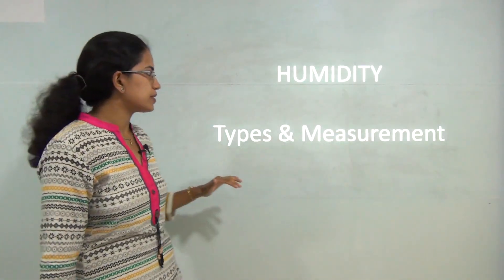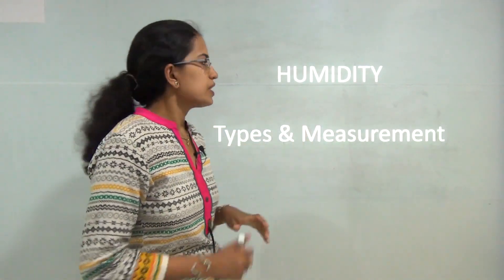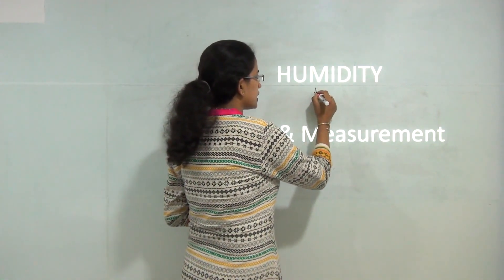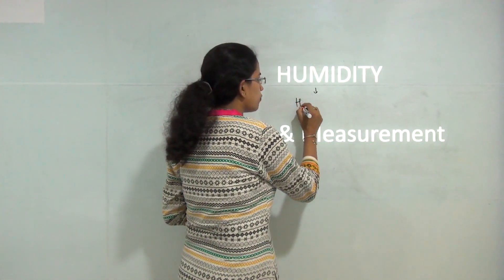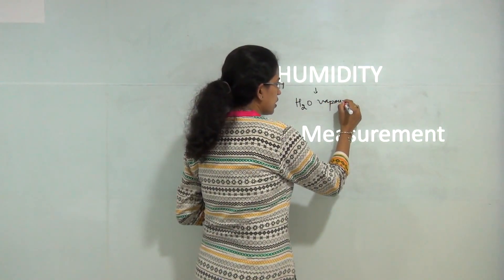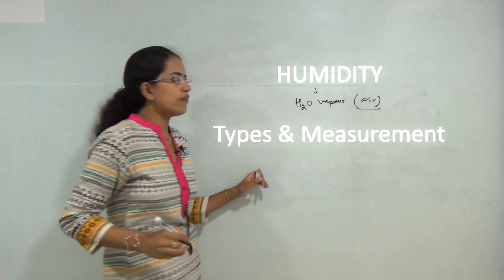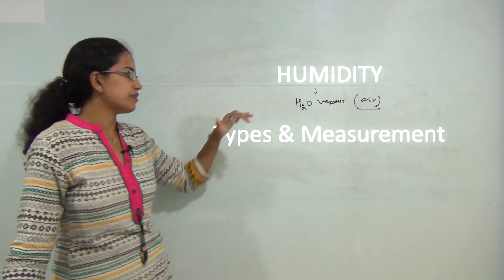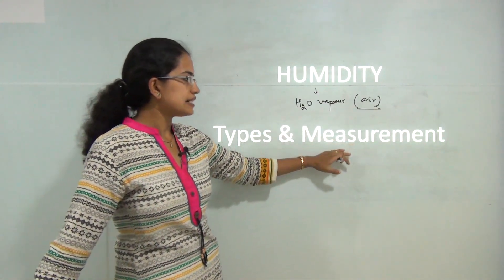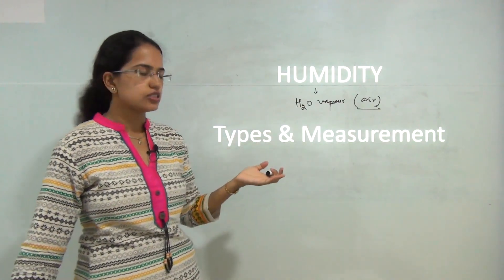Welcome again. In this session of climatology we would be talking about the topic humidity. In very simple terms, humidity is the amount of water vapor that is present in the atmosphere or air. When we talk about humidity, we will be understanding the various types of humidity, measurement of humidity, and its relevance in climatology.